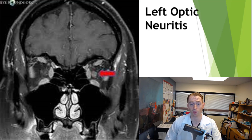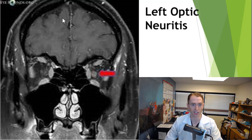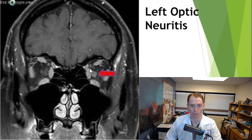Let's move to some of the spaces that MS can affect. This is an MRI of someone with left optic neuritis. You're looking at coronal images — slices through the face — and you can see the brain, the right orbit, and the left orbit. These are the extraocular muscles, and in the center is the optic nerve. You can see the right side looks normal, whereas the left side looks inflamed and takes up the contrast dye, consistent with optic neuritis.